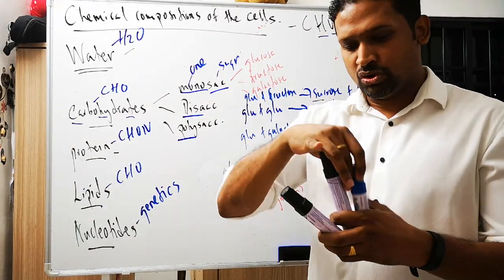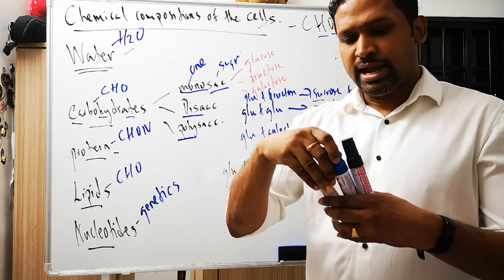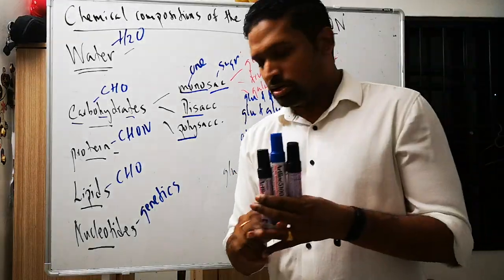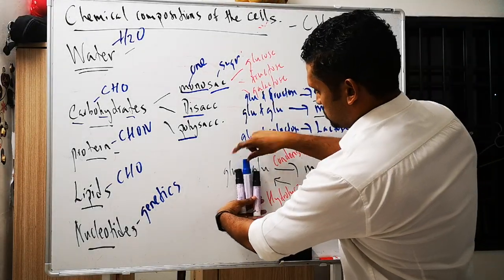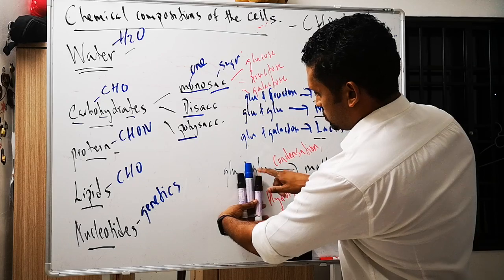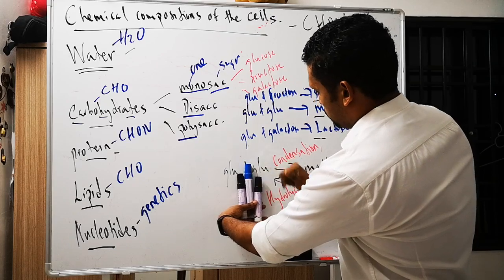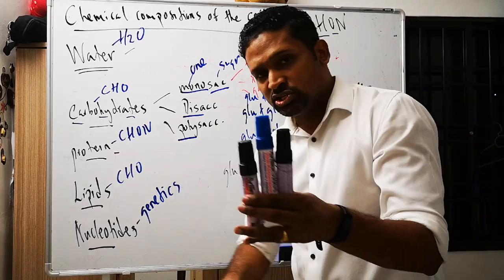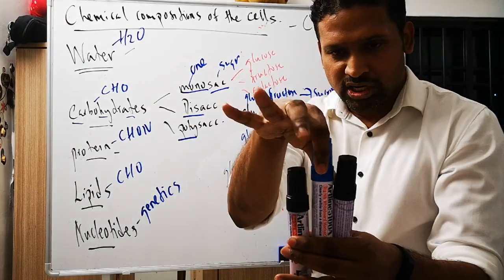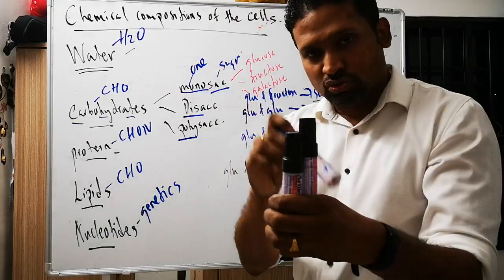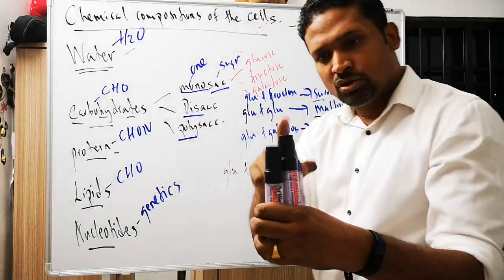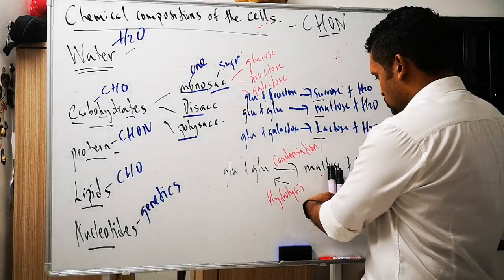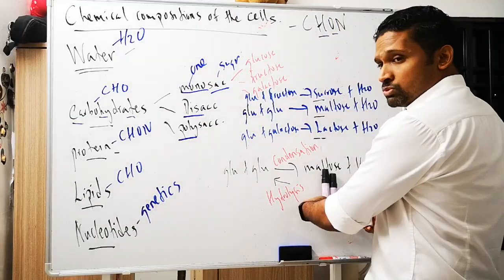Using glucose as an example with black marker representing glucose and blue representing water — condensation is when you take out the water: glucose plus glucose combine, and you remove water to form maltose plus water as a by-product. The two monosaccharides join together and water is released.